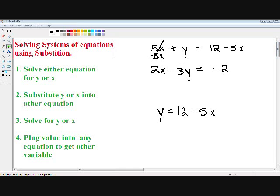I'm going to rewrite my second equation which is 2x minus 3y and instead of writing y I'm going to put a big parentheses, equals negative 2. I'm going to substitute my y which we know equals 12 minus 5x into this parentheses.